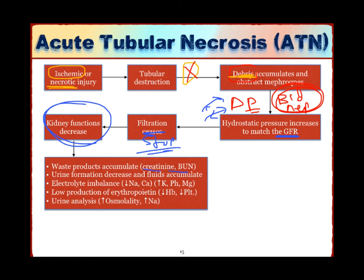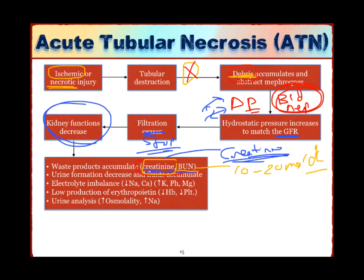Creatinine and BUN are examples of waste products that will accumulate. Creatinine is the end product of creatine, which is a protein, and is the best indicator of kidney function decline. BUN — blood urea nitrogen — is normally 10 to 20 mg/dL and results from protein metabolism. Creatinine is normally 0.6 to 1.2 mg/dL. When these waste products accumulate in the blood, they have serious consequences: they are neuro-depressants, can affect all cells, create a state of acidosis, and the patient may go into a coma.